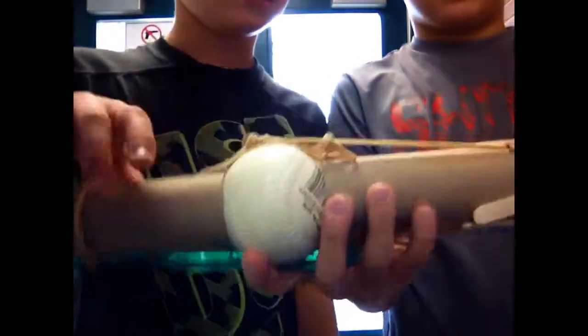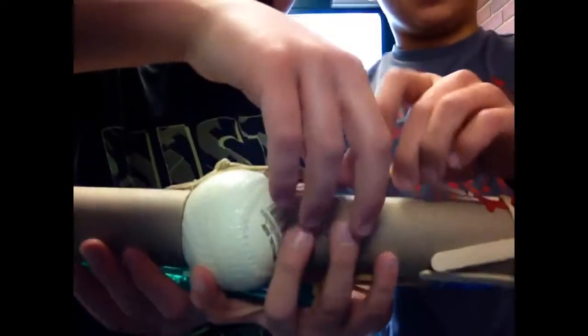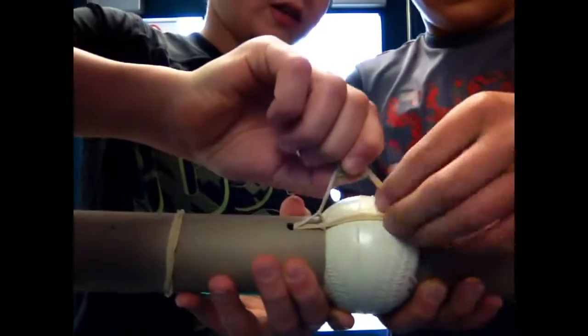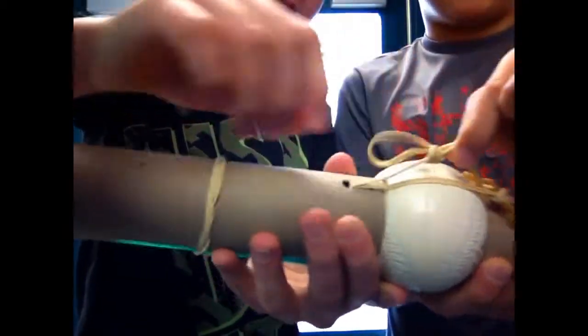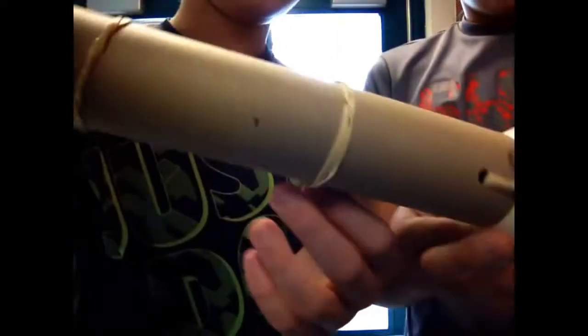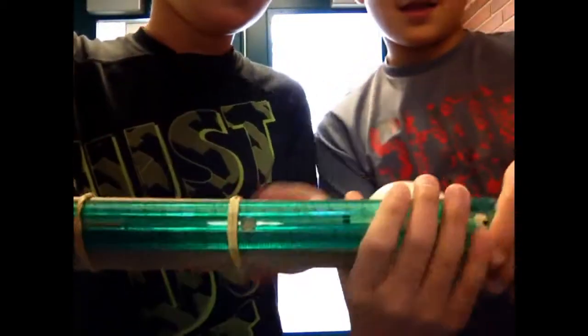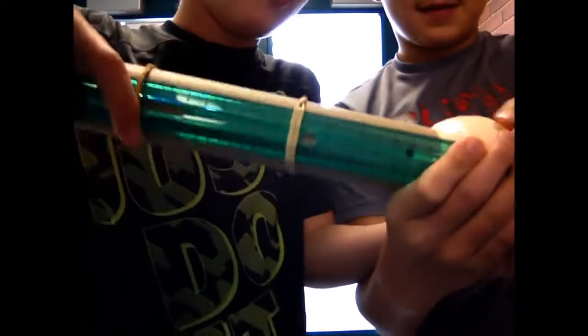The things that attach the muscle to the bone are the tendons, and these are rubber bands. And then this one's the ligament. Ligament attaches bone to bone, and then we have on the other side a ruler to stop it from over bending.